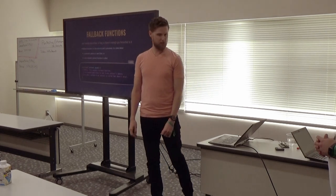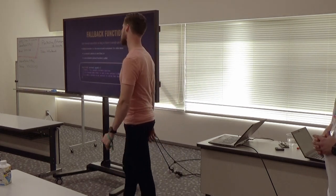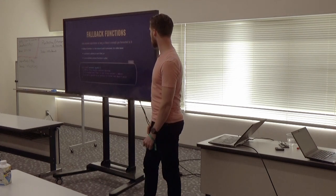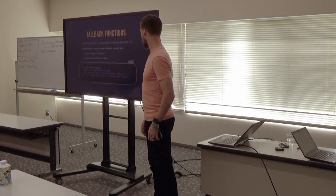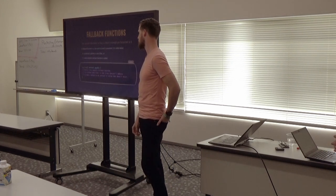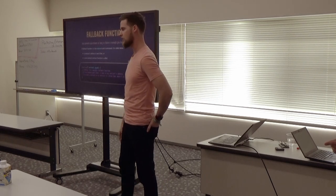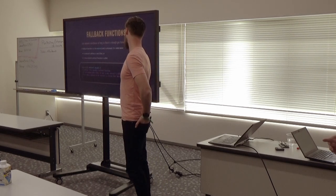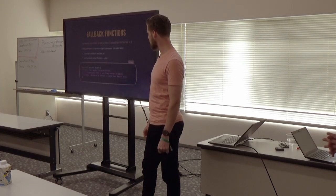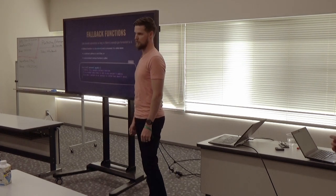Fallback functions are functions that can execute operations as long as there's enough gas. A fallback function must be external and is the unnamed function in your contract. It is called when a contract's address is sent ether or a non-existent contract function is called.